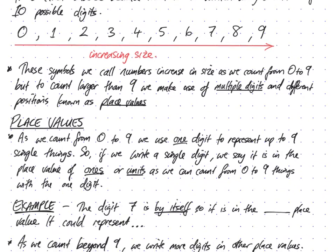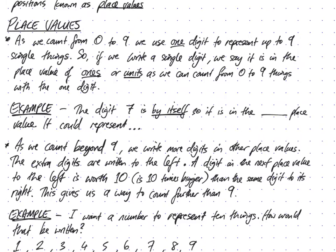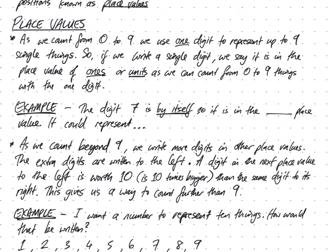Now let's talk about place values. As we count from 0 to 9, we're only using one digit to represent all those single things. The way we represent it could be sheep, counters, fruit - anything. But with those symbols by themselves, we can only represent 0 to 9 single things. So if we write a single digit, we say it is in the place value of ones or units, as we can count from 0 to 9 things with that one digit.